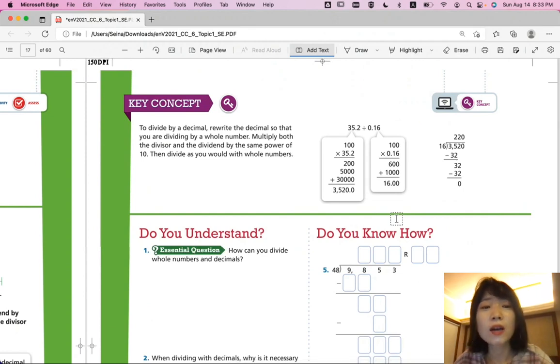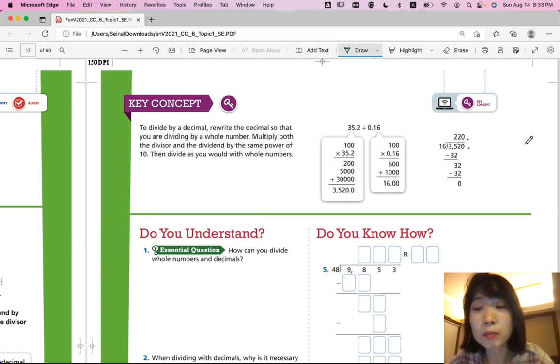Let's summarize our lesson. The key concept here is that when we divide by decimal, we have to rewrite the decimal so that you're dividing by a whole number like that. And, make sure you put the decimal place at the correct place.